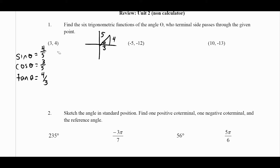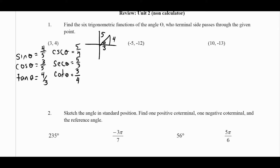The reciprocal function for sine is cosecant. All you're doing is taking that fraction 4 over 5 and flipping it. Secant we write as 5 over 3. The reciprocal function for tangent is cotangent, so we write that as 3 over 4. We don't need to worry about any negatives because it is in the first quadrant.